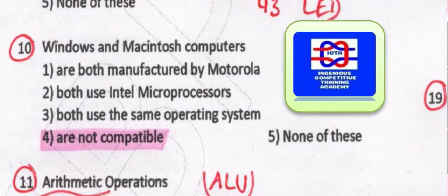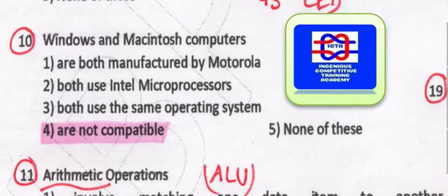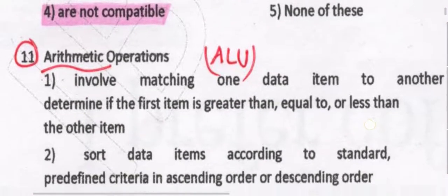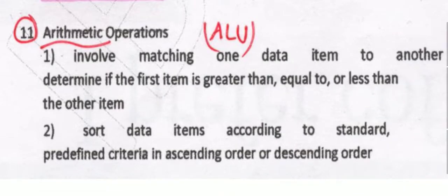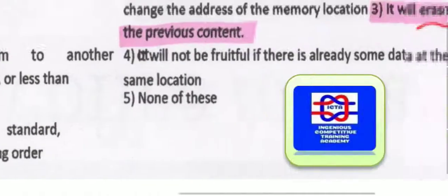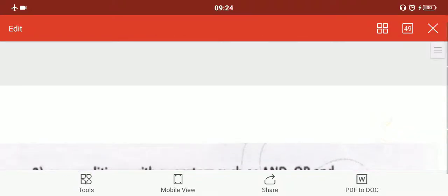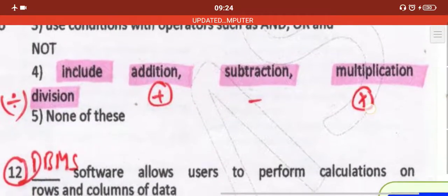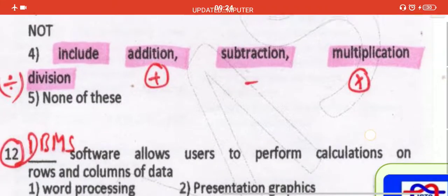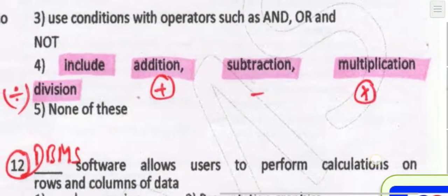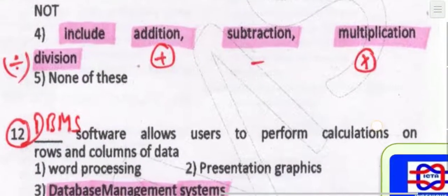Windows and Macintosh computers are not compatible — Windows is different and Macintosh PC is different; they are not at all compatible. Arithmetic operations — whatever the arithmetic operations we do, they are done in the arithmetic logic unit (ALU), which includes addition, subtraction, and multiplication.